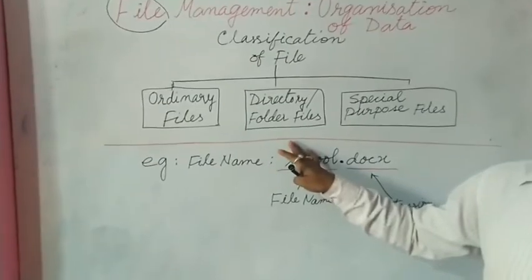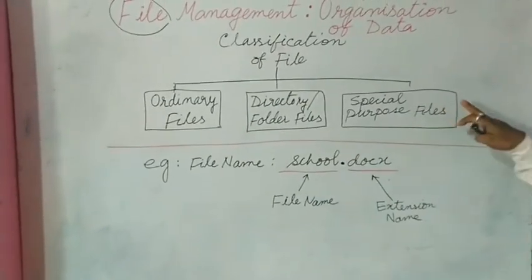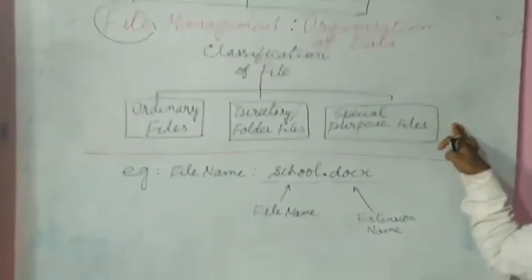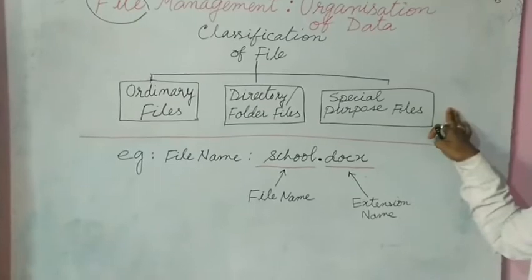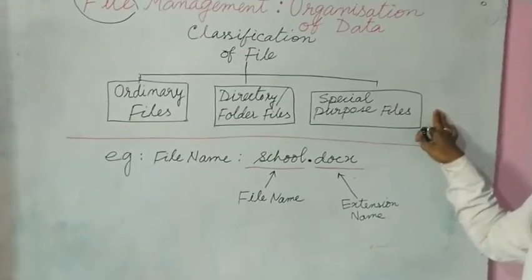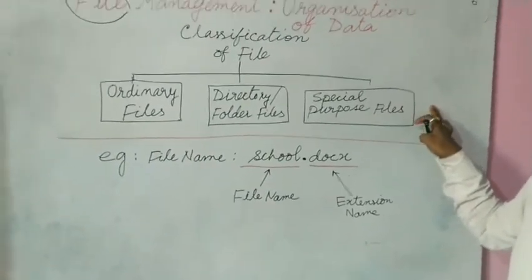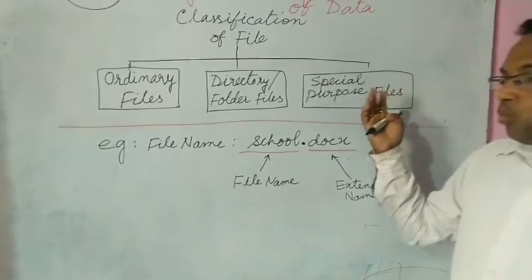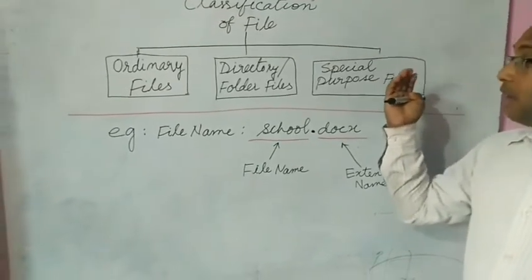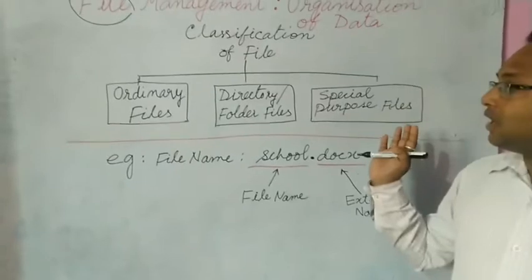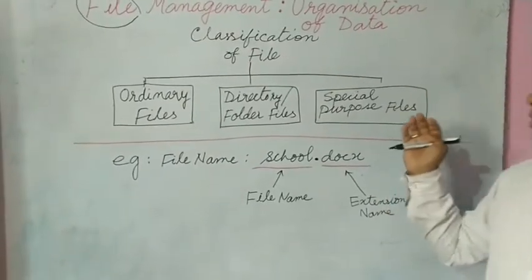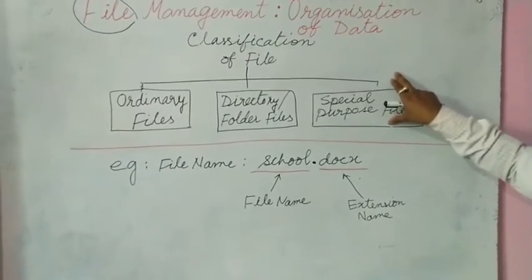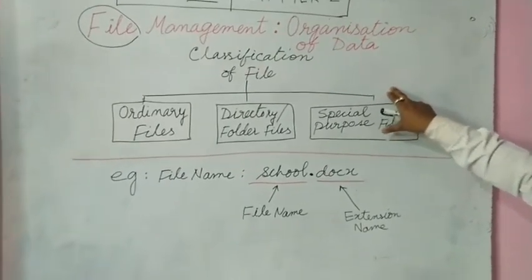Folder or directory files are your files which you keep under a folder for future reference. Special purpose files are the files which are present during the installation of Windows, like autoexe.bat, win.exe, and other important exe files — all known as special purpose files, made for special purposes like booting the computer or the normal functioning of a computer.